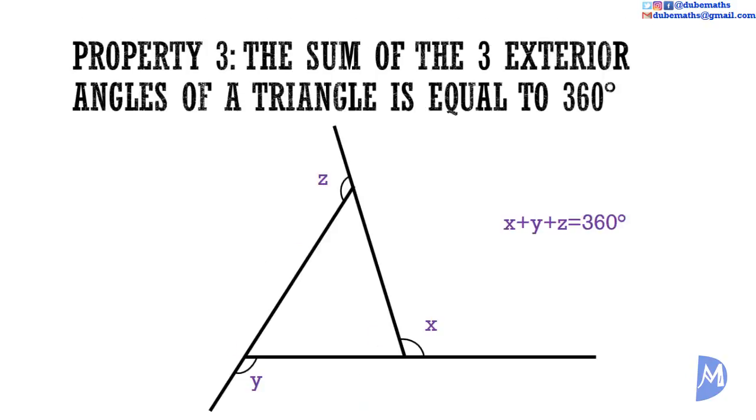Property 3: The sum of the three exterior angles of a triangle is equal to 360 degrees.